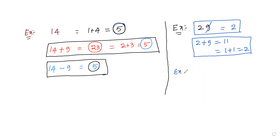Let me take another example: 1, 7, 9, 2. Here, 9 is present so you can directly remove it. Also, if any two digits sum to 9, you can eliminate those digits too. Here 7 plus 2 equals 9, so you can eliminate these two digits as well. Finally, I am left with 1, so the DigitSum is 1.